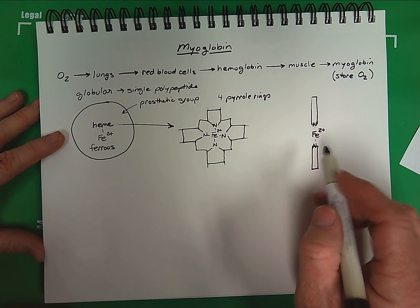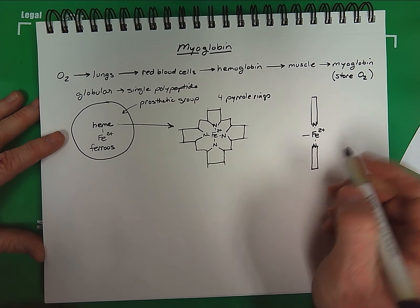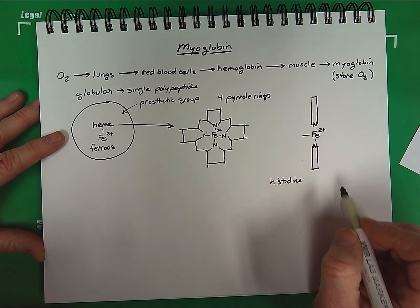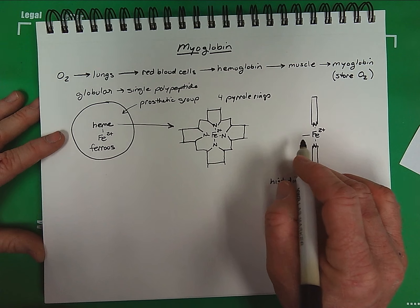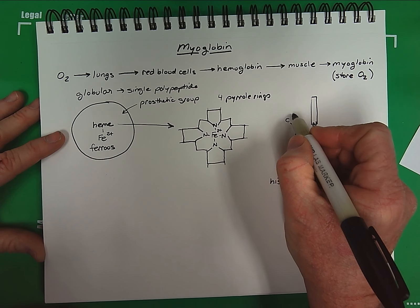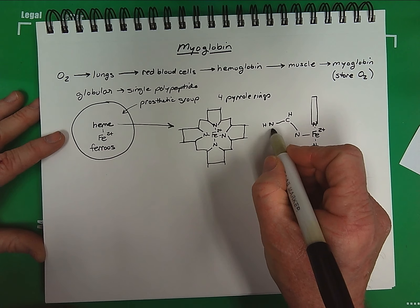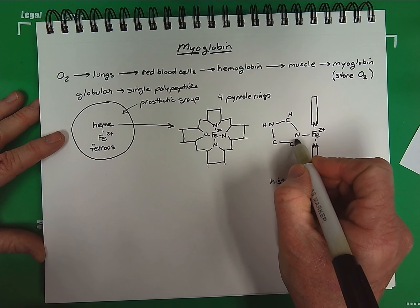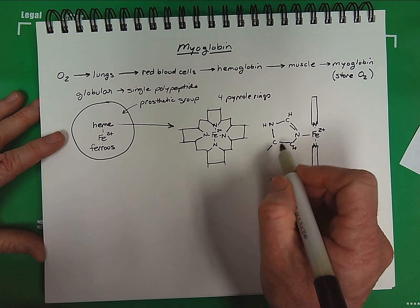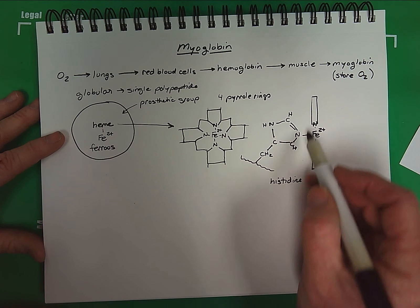Now the primary interaction of heme with the protein myoglobin is going to occur through a histidine amino acid. This histidine is part of the polypeptide of myoglobin, and it is binding the heme to the protein. For example, here is our side chain of histidine.